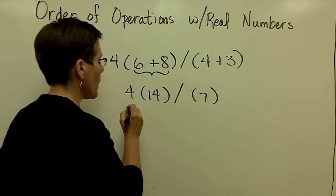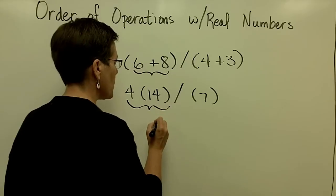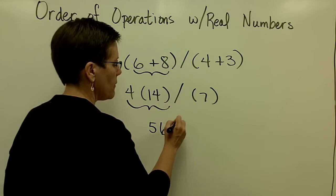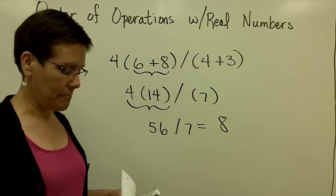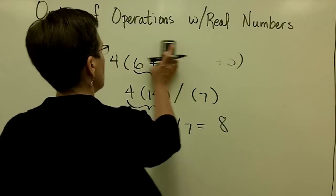Now I've got multiplication and division. I need to work from left to right. So 4 times 14 is 56, and 56 divided by 7 is 8.